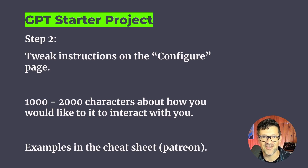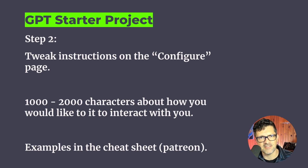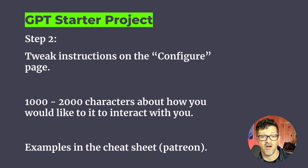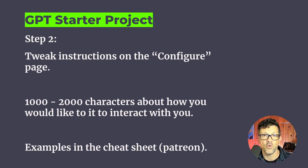Use best practices of custom instructions for how you want it to interact. For example, I encourage it to be radically transparent with me — I don't like when bots are always telling me I'm doing a great job. I also ask it to avoid defaulting to long lists of ten things, and instead describe three or four larger categories with subcategories. And when it asks me questions, I prefer just one or two at a time rather than ten or twenty.